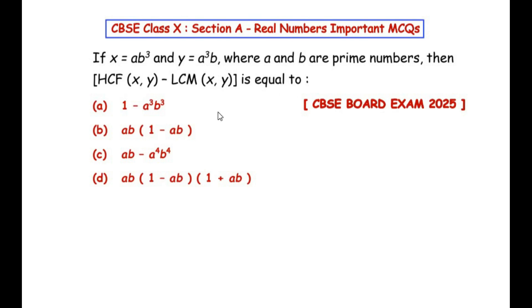Let us try to understand the question first. x and y are given in terms of a and b, and a and b are said to be prime numbers or prime factors. We have to find the HCF of x and y, then find the LCM of x and y, and the difference between these two numbers is one of the answers from the given four options.